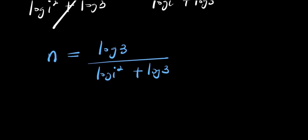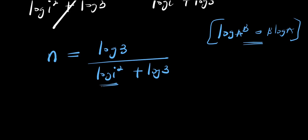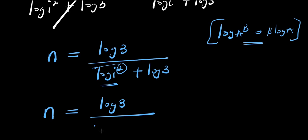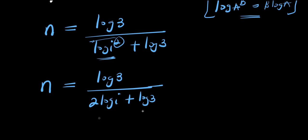Now the next step is for us to apply the other identity: remember if you have log a to the power b, this equals b times log a. So we apply this property, and we are going to have n equals log 3 divided by 2 log i plus log 3. So this becomes our final solution using the first method.